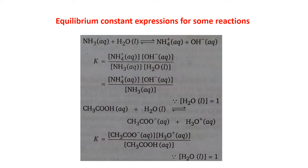For NH3(aq) + H2O(l) ⇌ NH4⁺(aq) + OH⁻(aq): H2O is in the liquid state, so its concentration is 1. K = [NH4⁺(aq)][OH⁻(aq)] / ([NH3(aq)][H2O(l)]). Since H2O(l) = 1, the equilibrium expression becomes K = [NH4⁺(aq)][OH⁻(aq)] / [NH3(aq)].